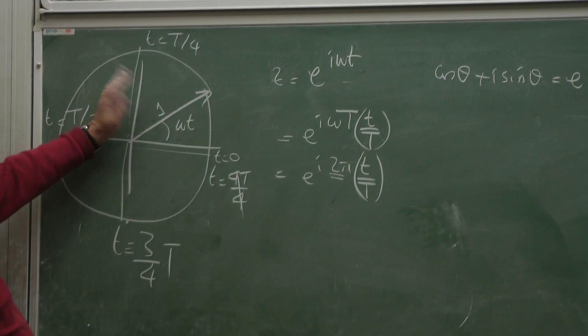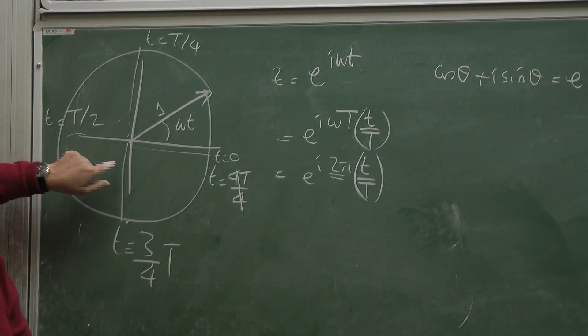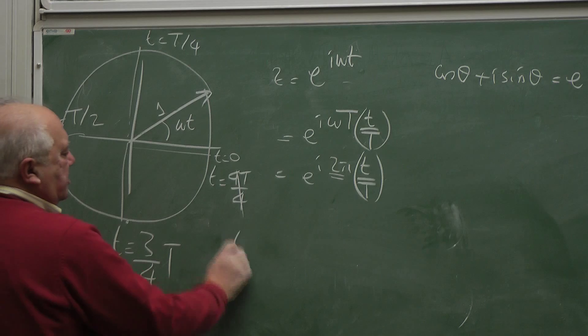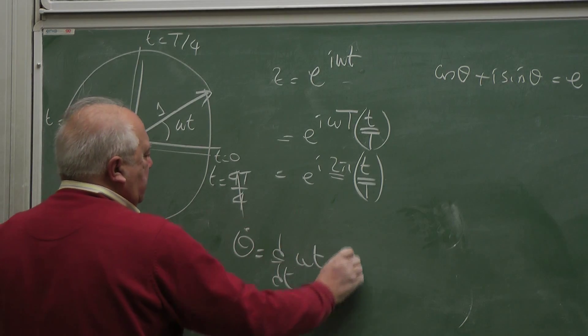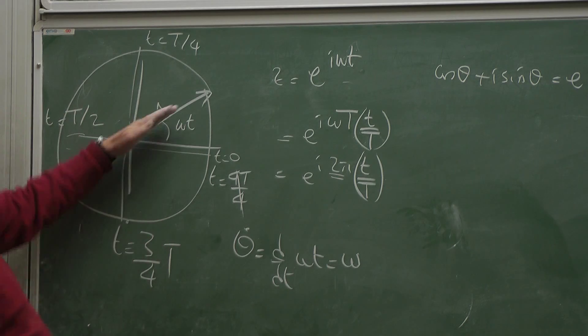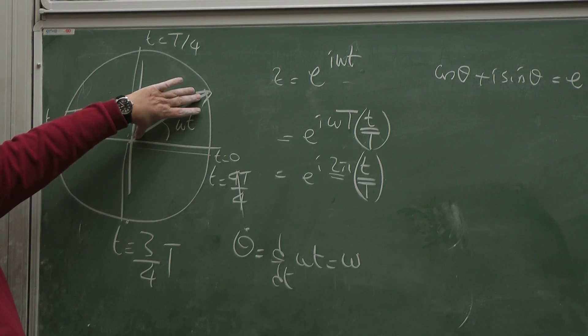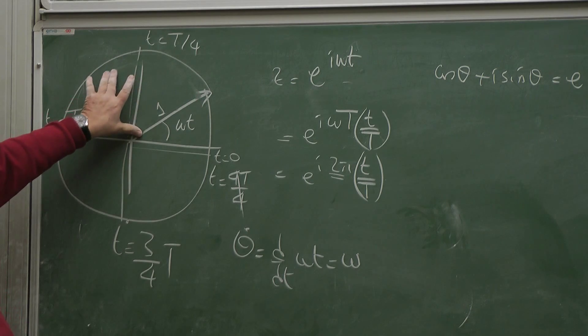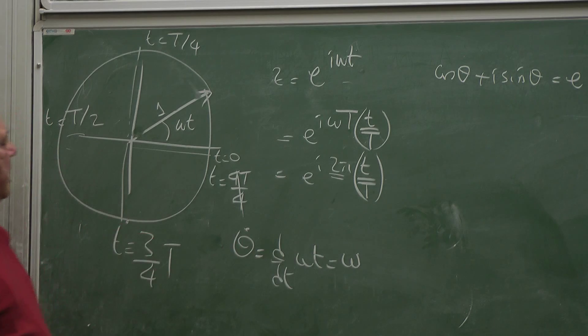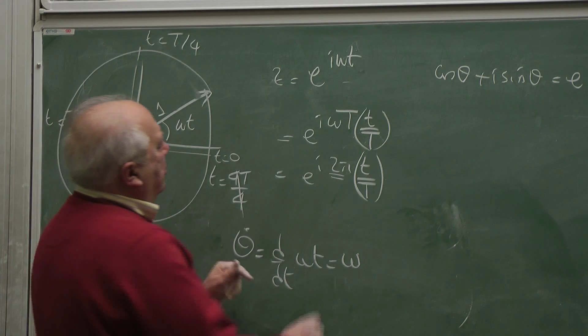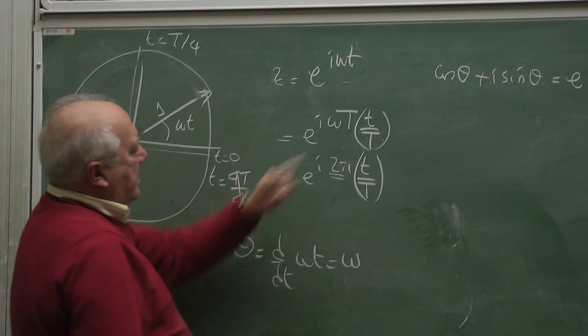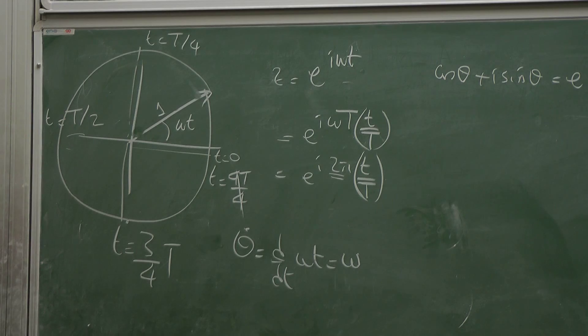So this thing is simply rotating with the angular speed theta dot equals d/dt omega t equals omega. So it's a vector in the complex plane of magnitude 1, rotating with uniform angular speed omega, and completes one cycle in time T given by 2 pi over omega. So that's our phasor.